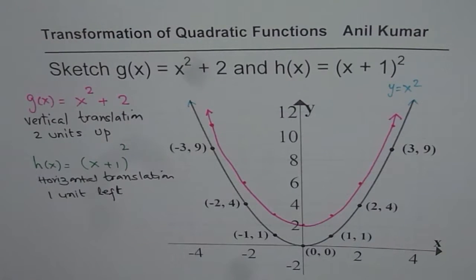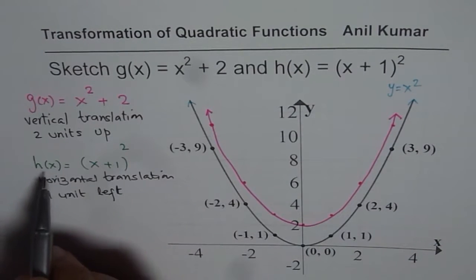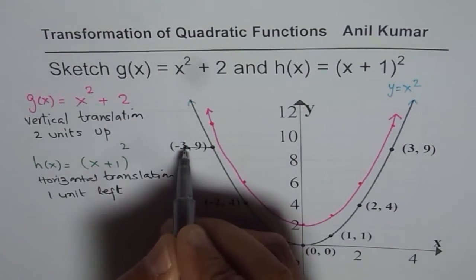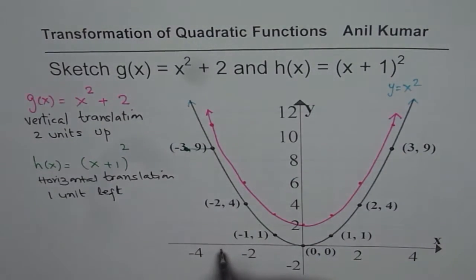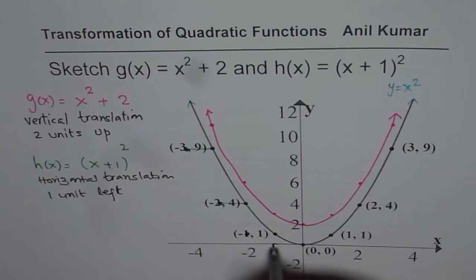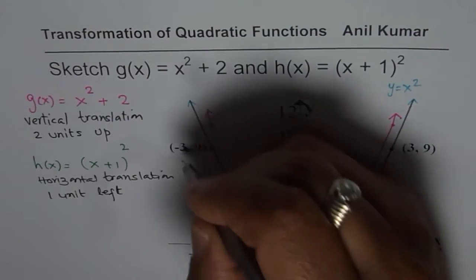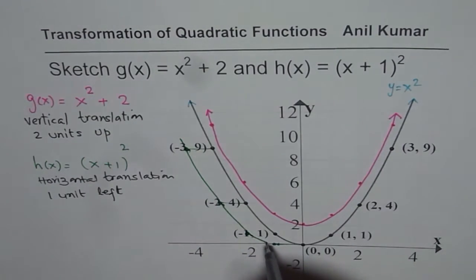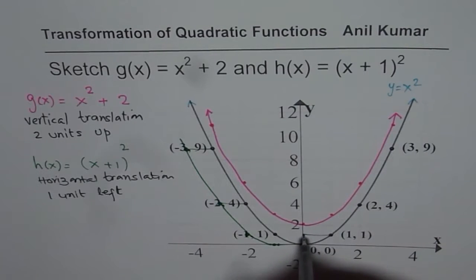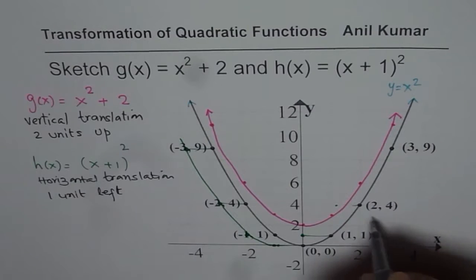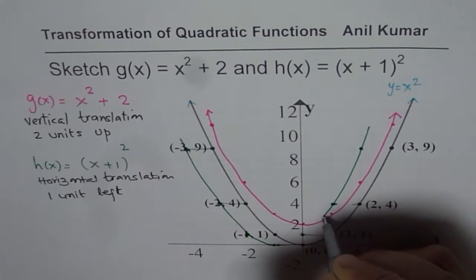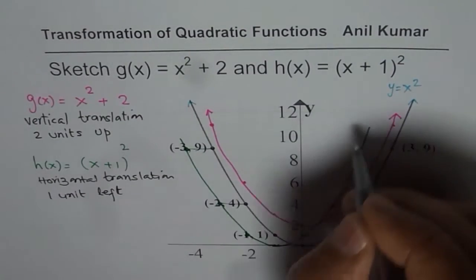Each point will be moved 1 unit to the left to sketch the graph for h of x. For example, the point at x = 3 moves left to x = 2, and the point at x = 1 moves to x = 0. We are moving every key point 1 unit left — both on the left side and the right side of the parabola — and then joining them to get the transformed graph.